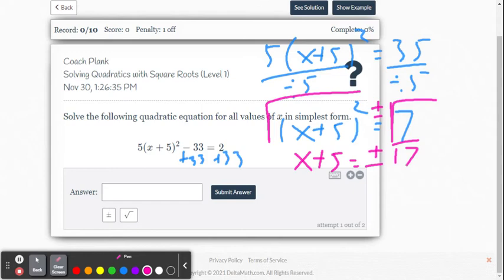So now I can subtract 5 from both sides, or what you can do is rewrite this as two equations. So we can say x plus 5 equals negative square root of 7, and x plus 5 equals positive square root of 7. All right, so now we're going to subtract 5 from both sides.